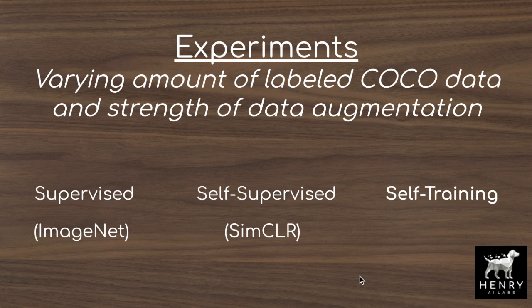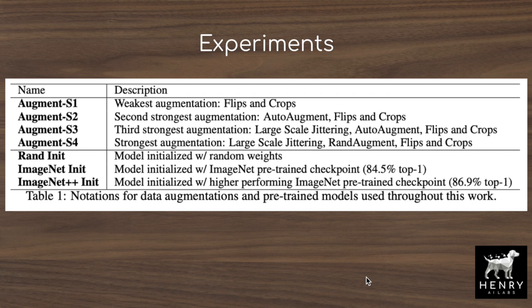The first set of experiments varies the amount of labeled COCO data for downstream fine-tuning and the strength of data augmentation. Augmentations range from simple flipping to AutoAugment or RandAugment, which use more sophisticated scheduling of augmentation magnitudes — such as whether to rotate by 50 degrees or 5 degrees — throughout training. They compare supervised pre-training with ImageNet, self-supervised learning with SimCLR, and the self-training algorithm.